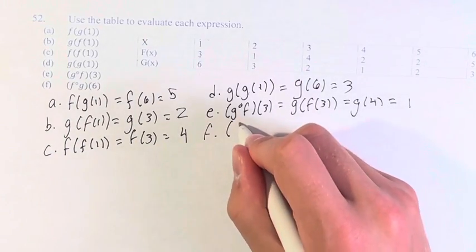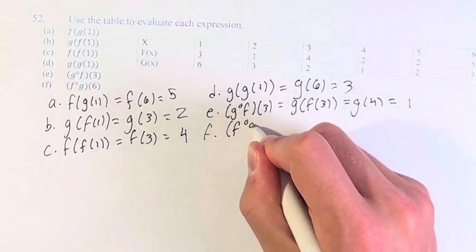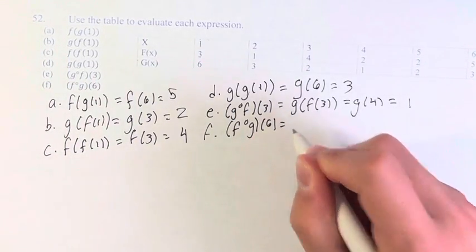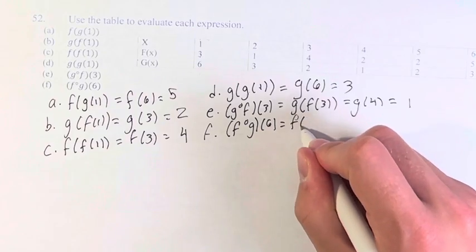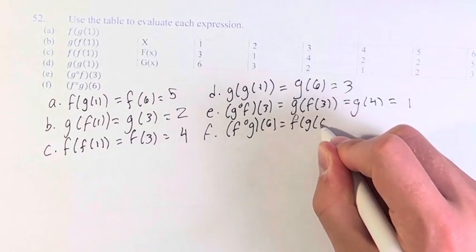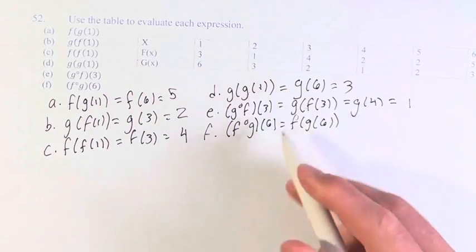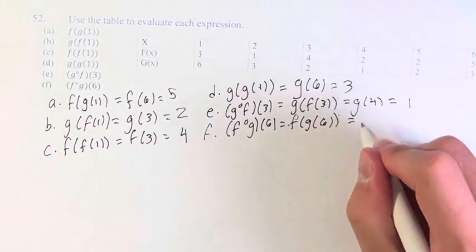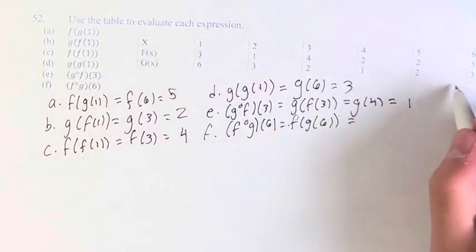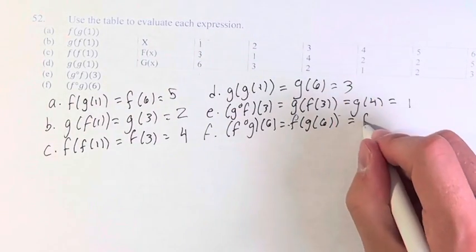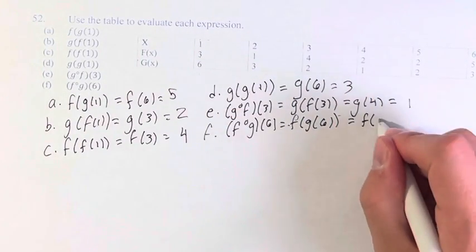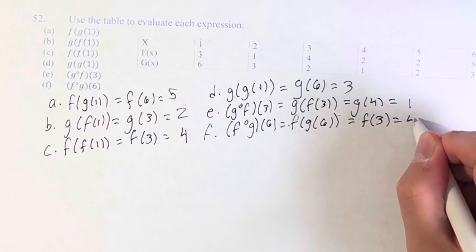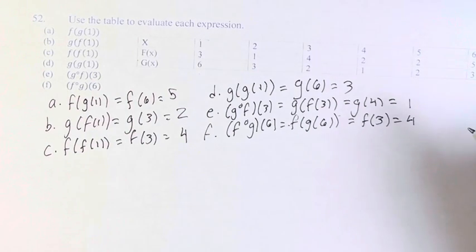Similar thing here — f of g of 6 can be written the same way as the other ones, f of g of 6. g of 6 is 3, so this is f of 3. And f of 3 is 4.